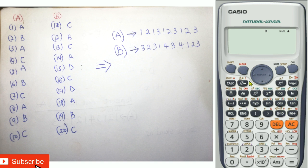So the first ten we have: one as A, two as B, three as A, four as C, five as A, six as B, seven as C, eight as A, nine as B, ten as C. Then we store this in a variable, so shift, store in A.